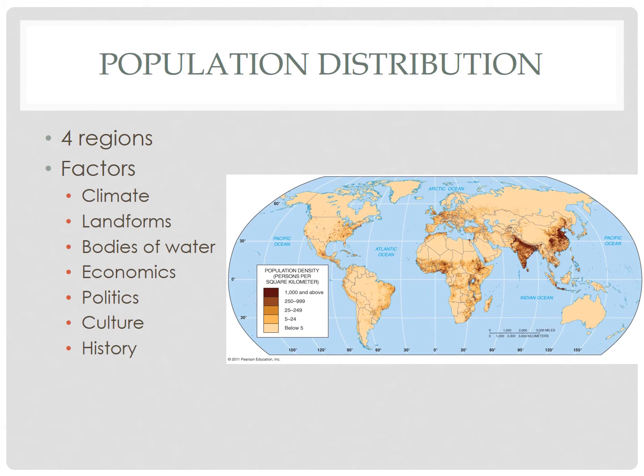Hello Human Geographers, we are back at it again this evening. Tonight, we begin Unit 2 by examining the distribution or organization of the population of our planet. If you recall, distribution is typically composed of three characteristics – density, concentration, and pattern. The world contains nearly eight times more people than it did just 200 years ago.